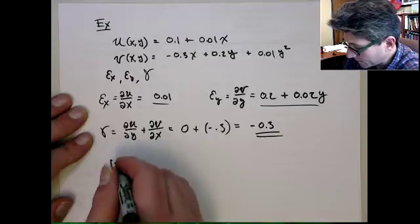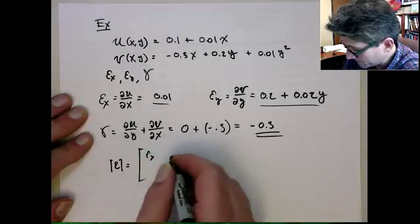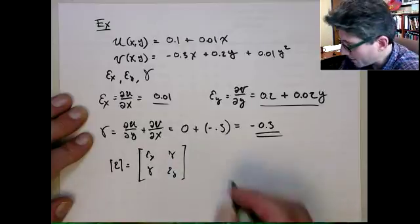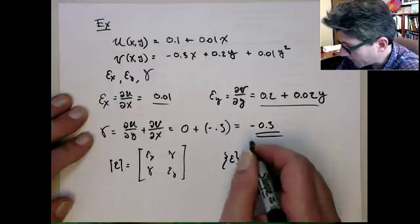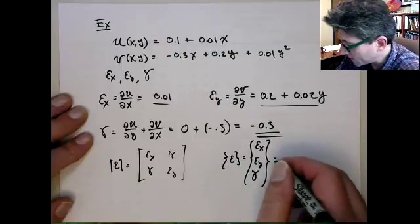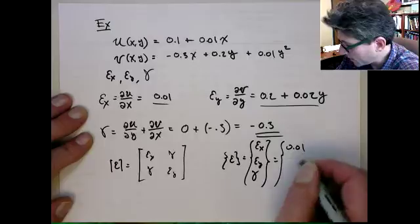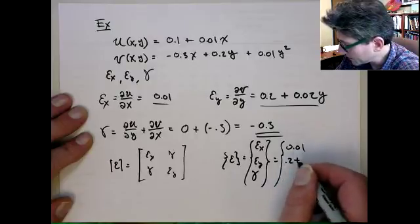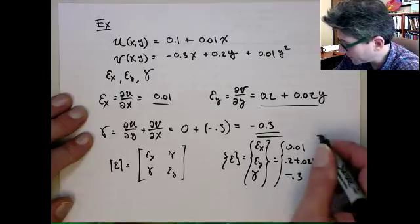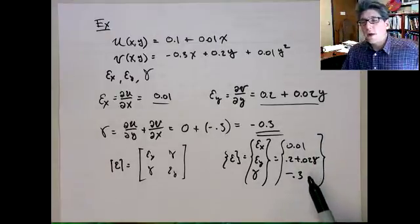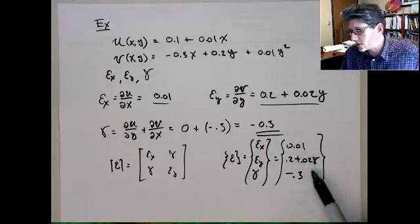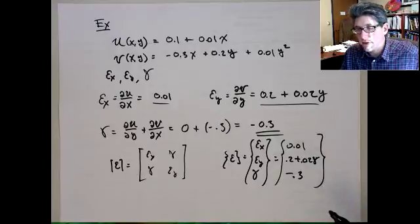Sometimes people like to write this in a matrix or in void form. For finite elements, more conveniently, we write this in void form as a column vector: epsilon x, epsilon y, and then the in-plane value. So this is just going to be 0.01, 0.2 plus 0.02 times y, and then finally minus 0.3. If you wanted to get it at an exact point, you would get it by plugging the values for x and y into this value.